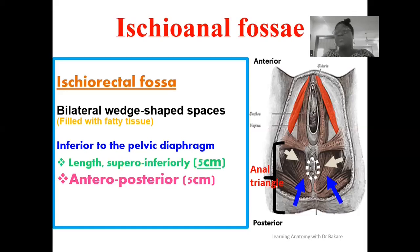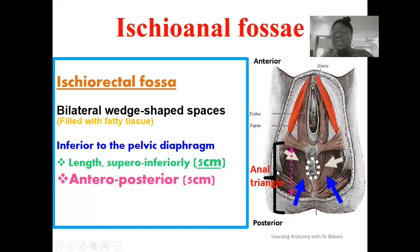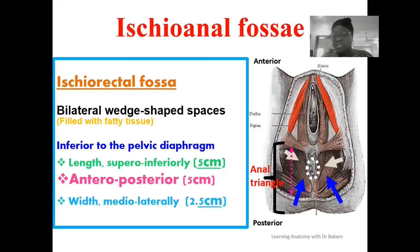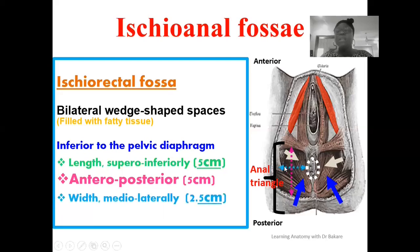Taking the anterior-posterior dimension using this image, from the anterior pole to the posterior pole is also about five centimeters. Then if you take the width, running from the medial pole to the lateral pole, this is about 2.5 centimeters. This dimension is the same on both sides.